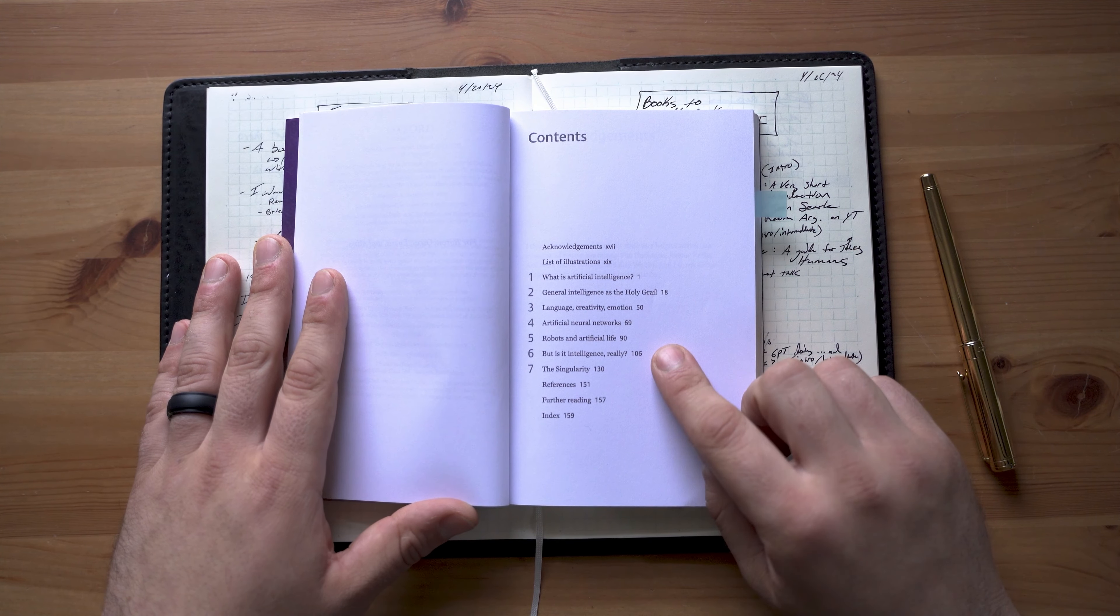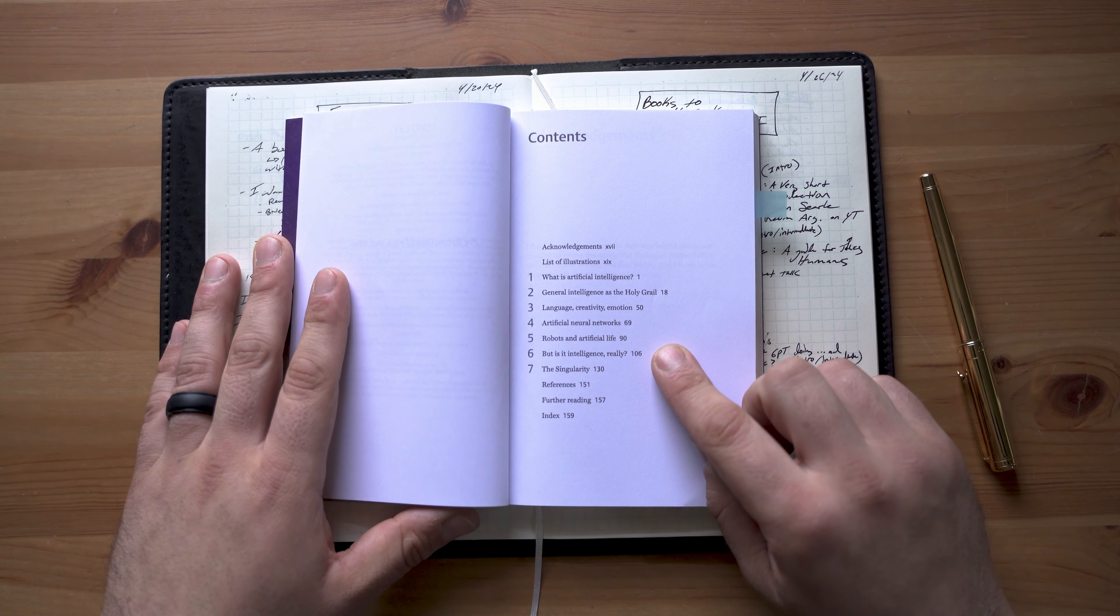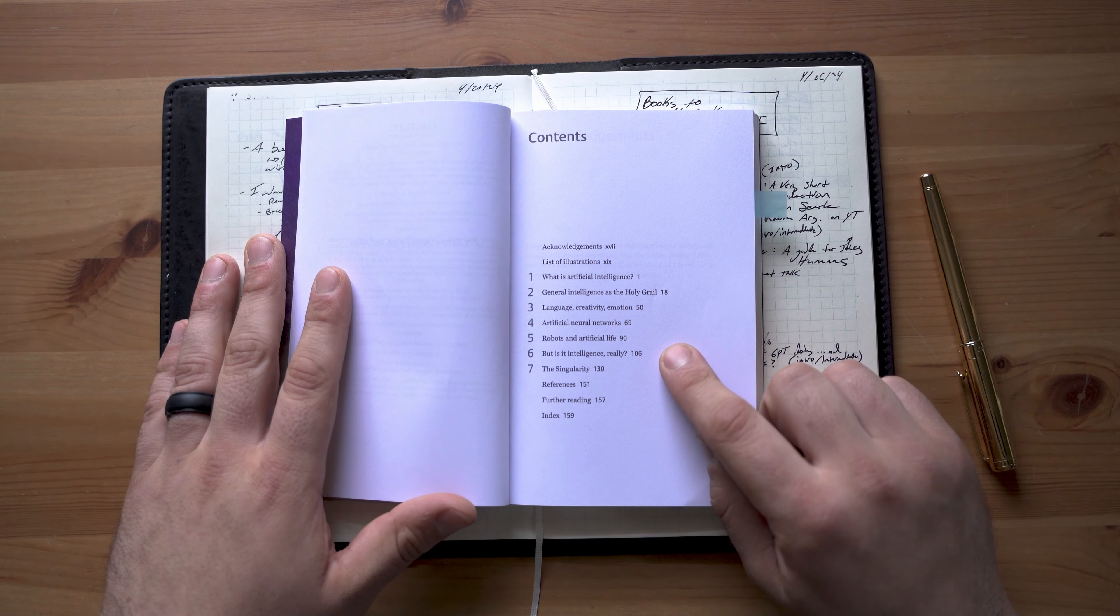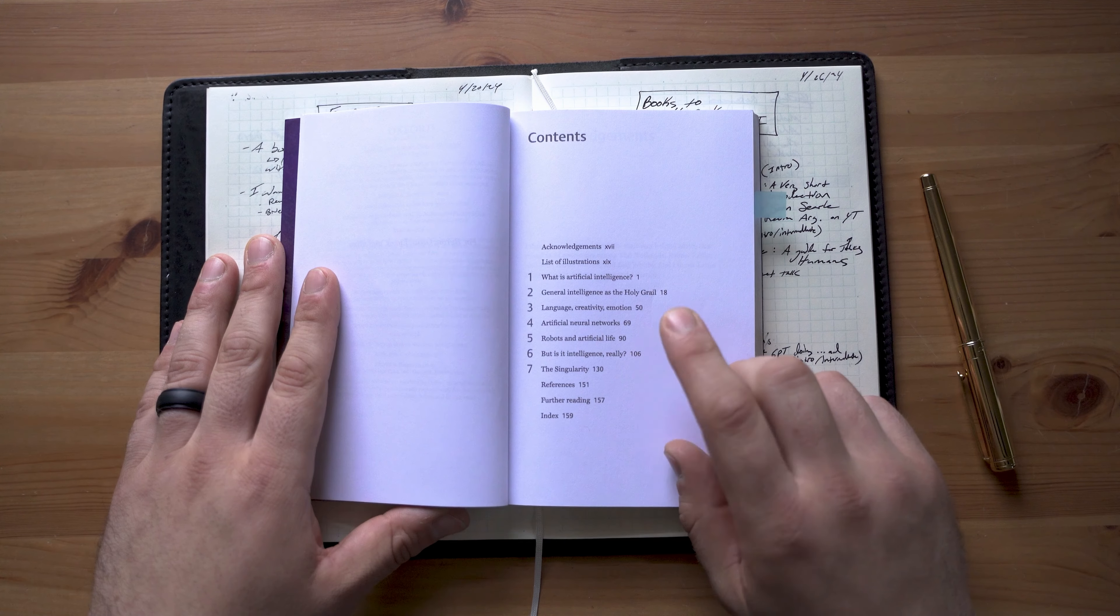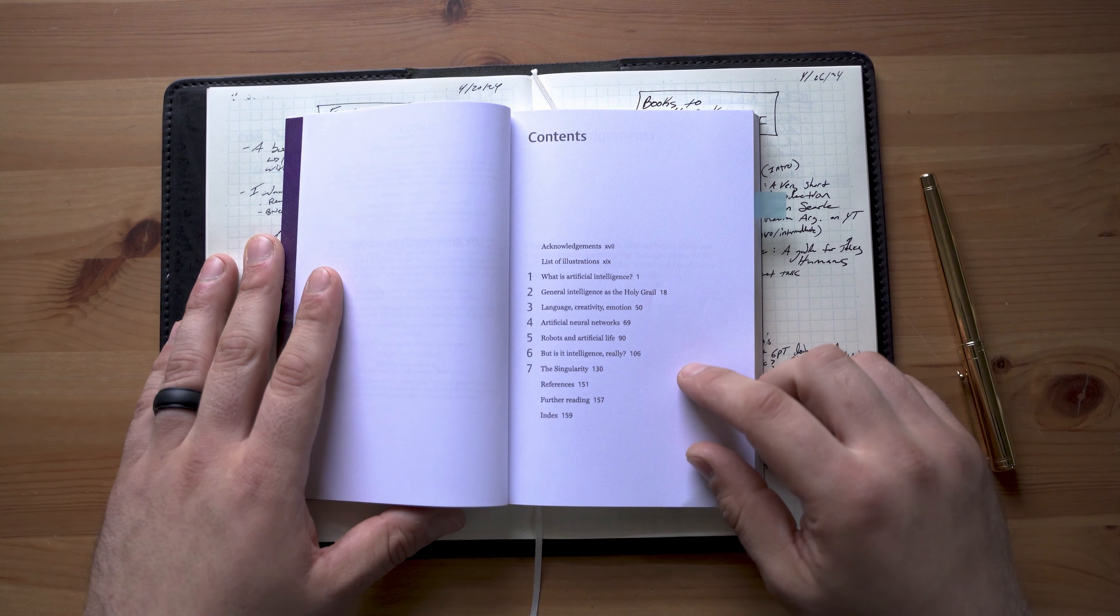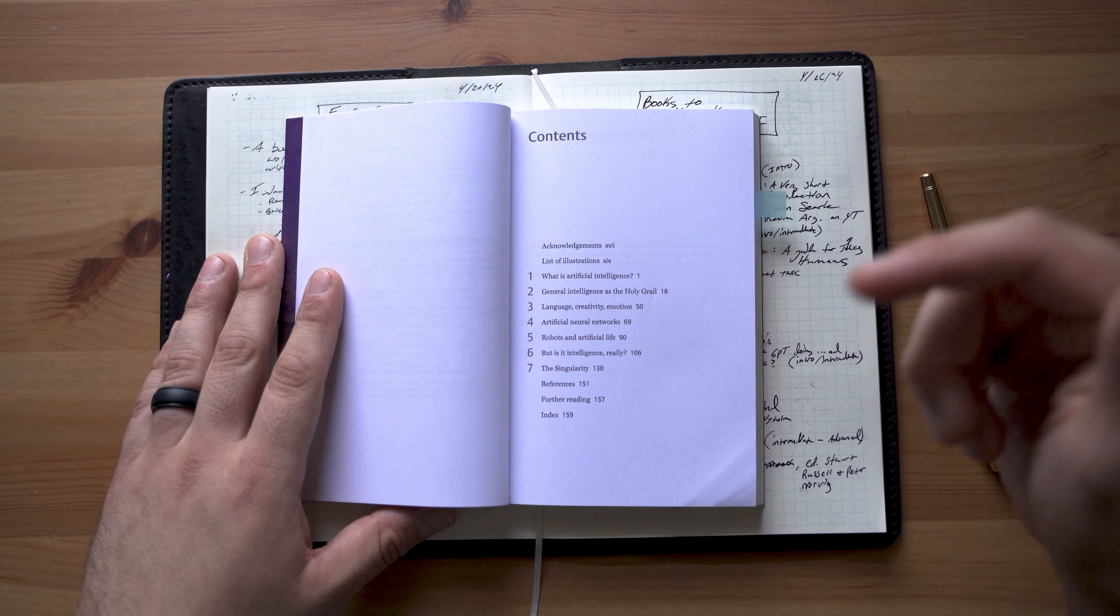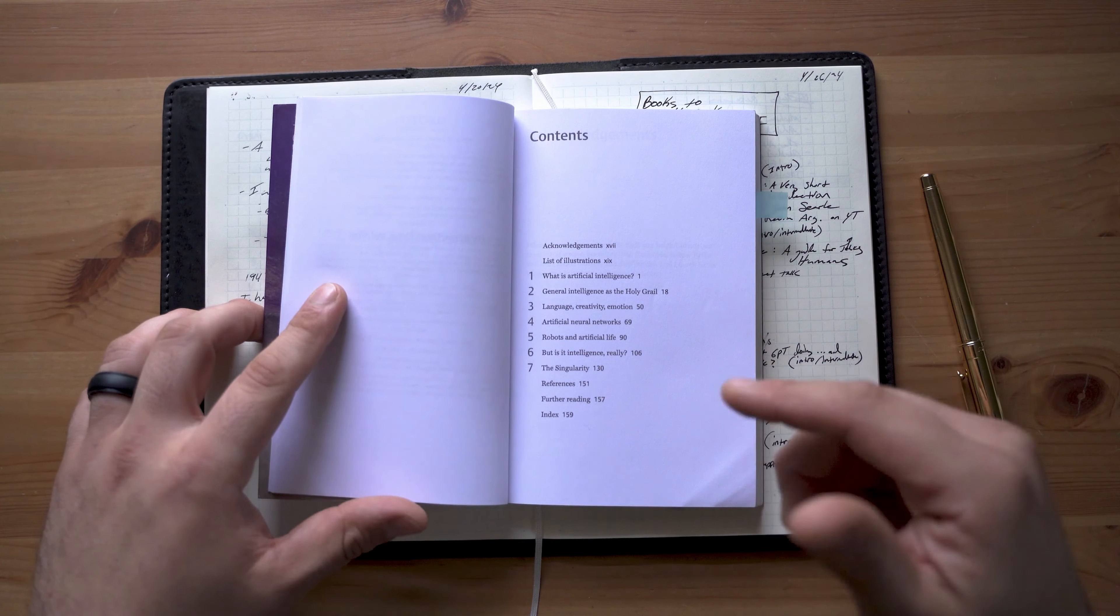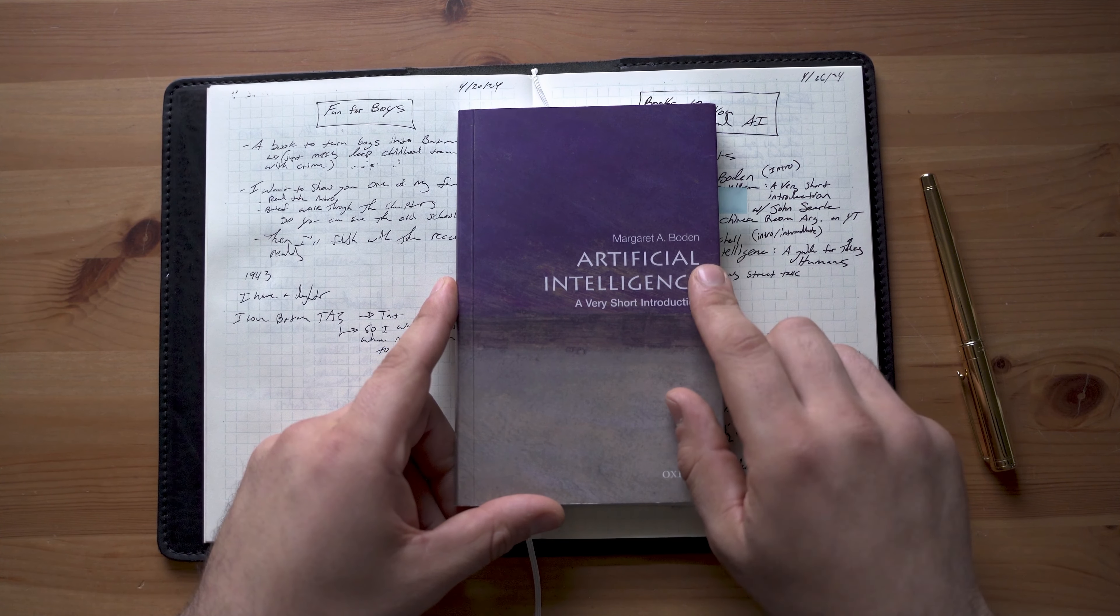She gets into things like John Searle's Chinese room argument against strong artificial intelligence or conscious or sentient AI. She's actually done at least one debate slash conversation with John Searle on that argument. I think Searle probably won that exchange, but if I can find it, I'll leave a link in the description. It's a fascinating conversation. So grab this book, Artificial Intelligence, A Very Short Introduction by Margaret Bowden.